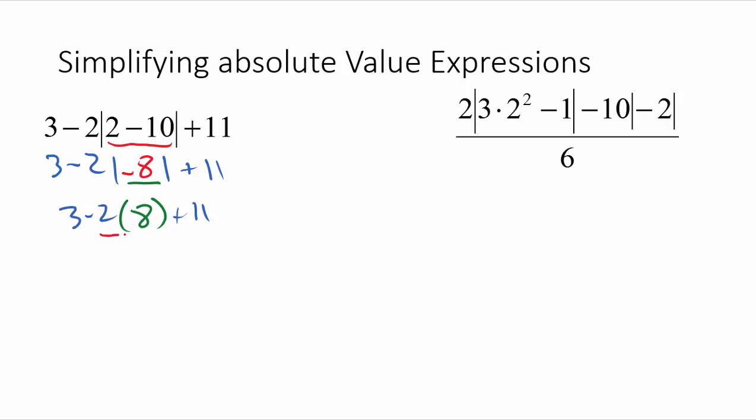Negative 2 times 8. Multiplication will come next before addition and subtraction. So 2 times 8 is going to be 16. Since that's a negative 2, it should be a minus 16. I'll bring down the plus 11, bring down the 3.